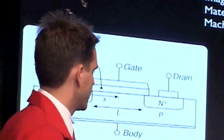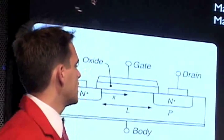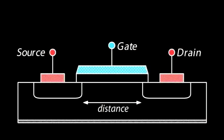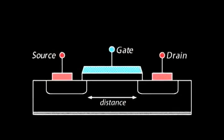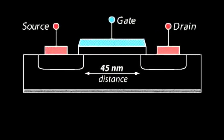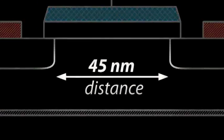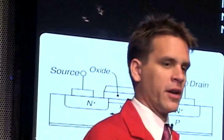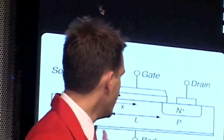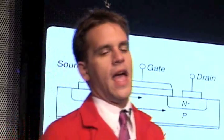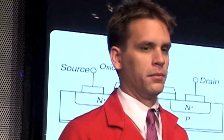But it's been enabled almost exclusively by the shrinking of this device. The distance between the source and the drain is getting smaller and smaller with each successive generation of computer processors. The current generation now has that distance at something like 40 to 50 nanometers — we call it the 45 nanometer process. That device has been getting smaller and smaller, enabling computers to be faster and more complex.